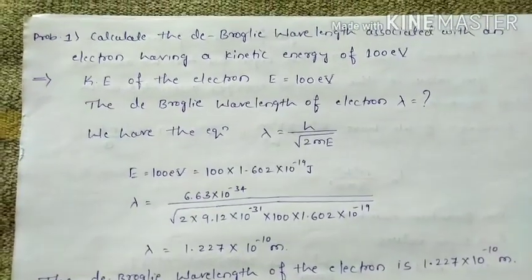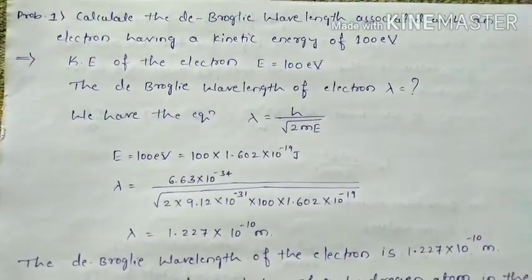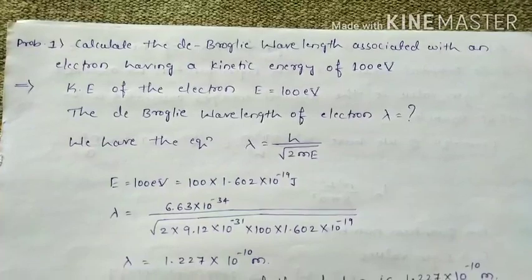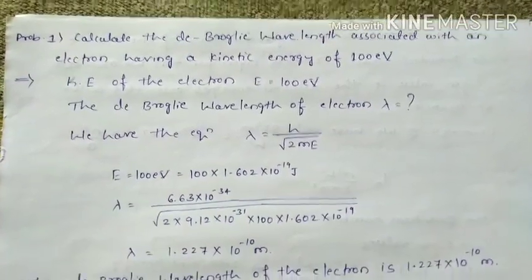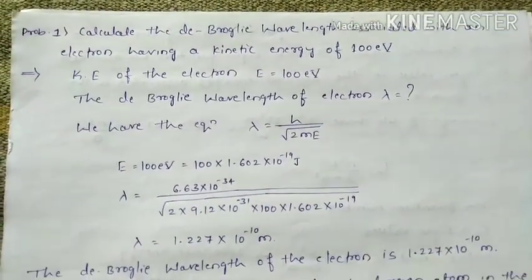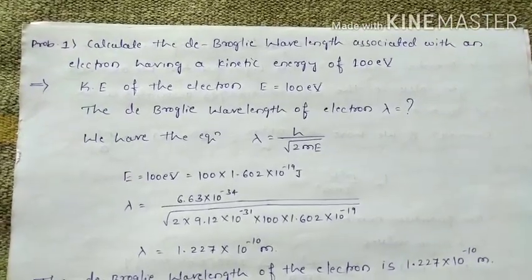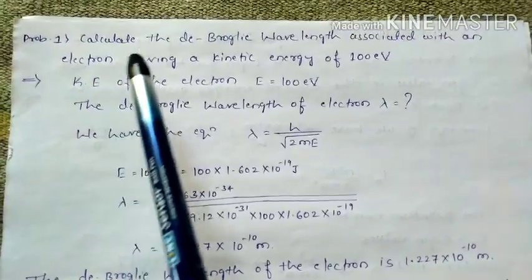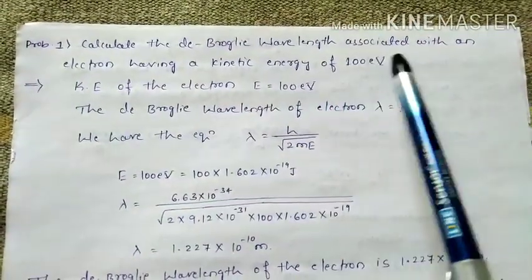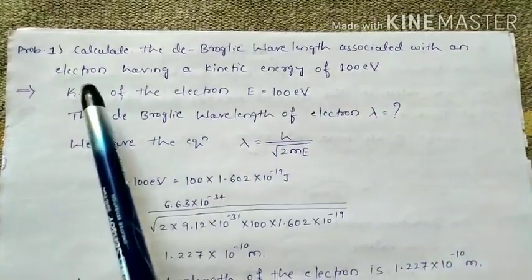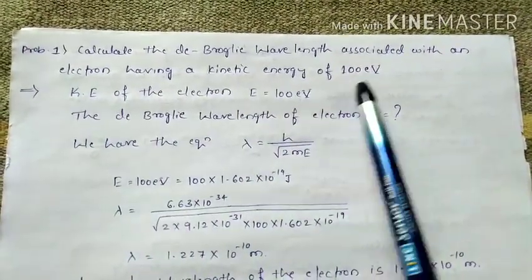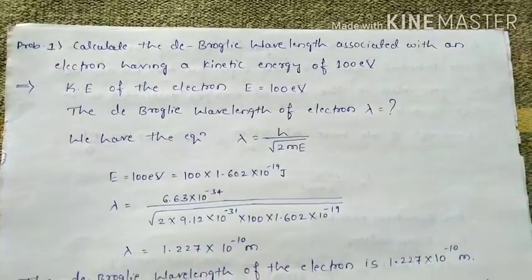Hello dear students, today we will solve some problems related to quantum mechanics. In the first problem, calculate the de Broglie wavelength associated with an electron having kinetic energy 100 electron volts.